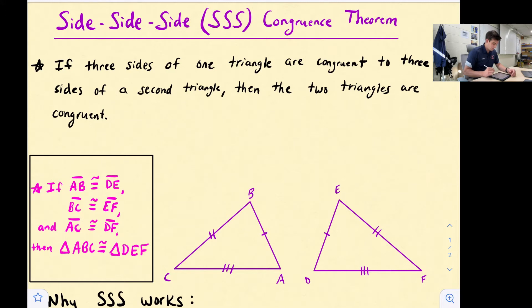Here's our example right here. We have triangle ABC and triangle DEF. If side AB is congruent to side DE, so there's one pair of congruent sides, and we have BC congruent to EF, so another pair of congruent sides, and side AC is congruent to side DF, so three sides are congruent, then we have congruent triangles.